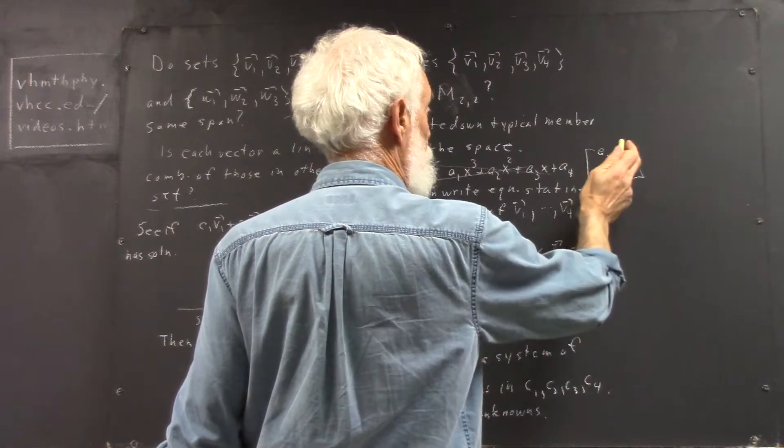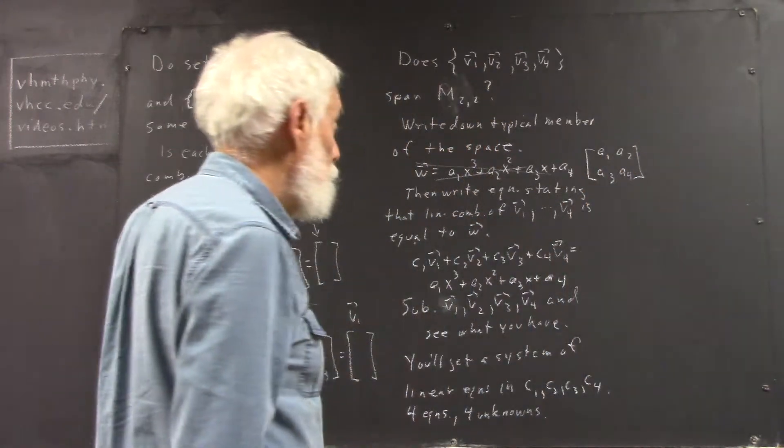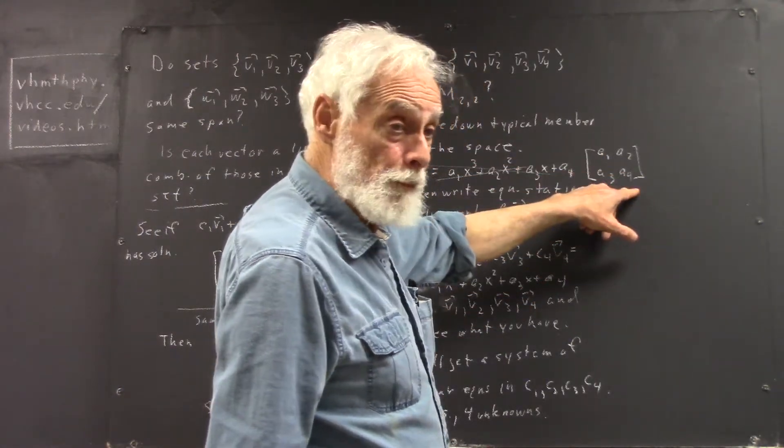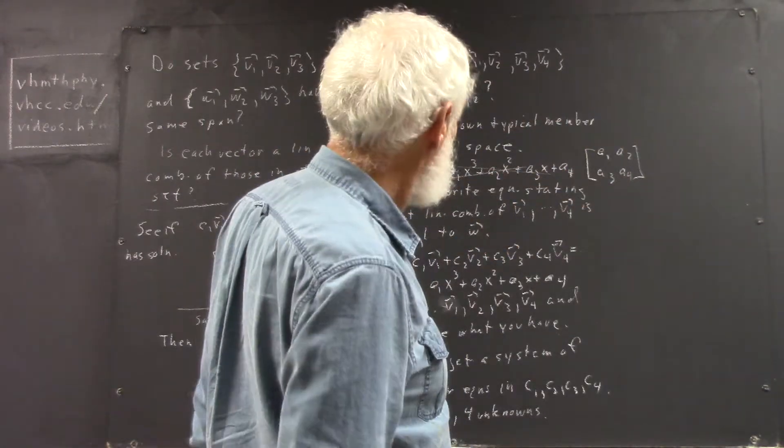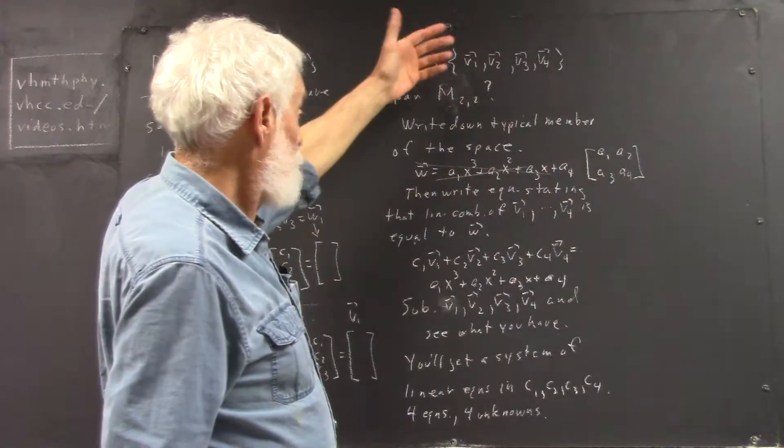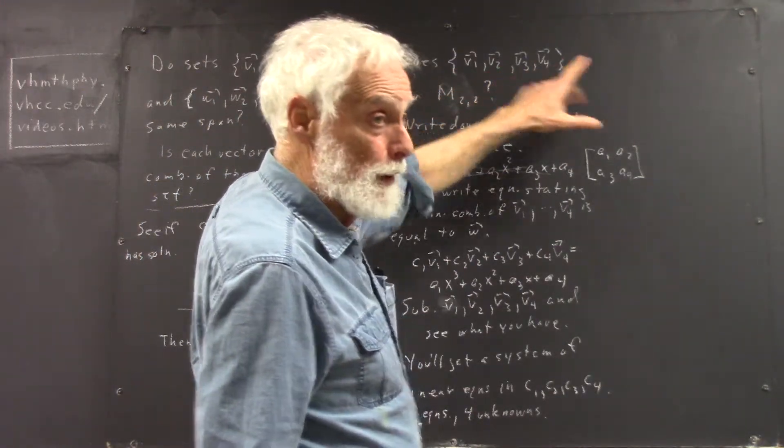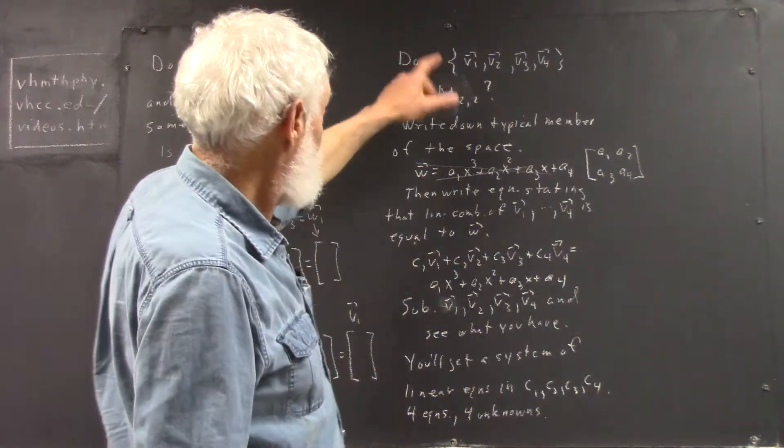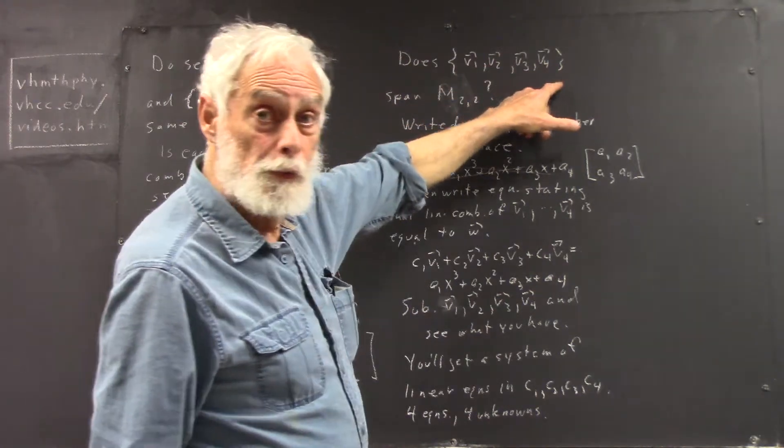or A11, A12, A21, A22, whatever way you want to write it. You just write down arbitrary symbols for the four members of that matrix, and then you do the same thing. And your V1, V2, V3, V4 had better be 2 by 2 matrices in that case. Just as in the case of P3, these had better be polynomials of degree 3.